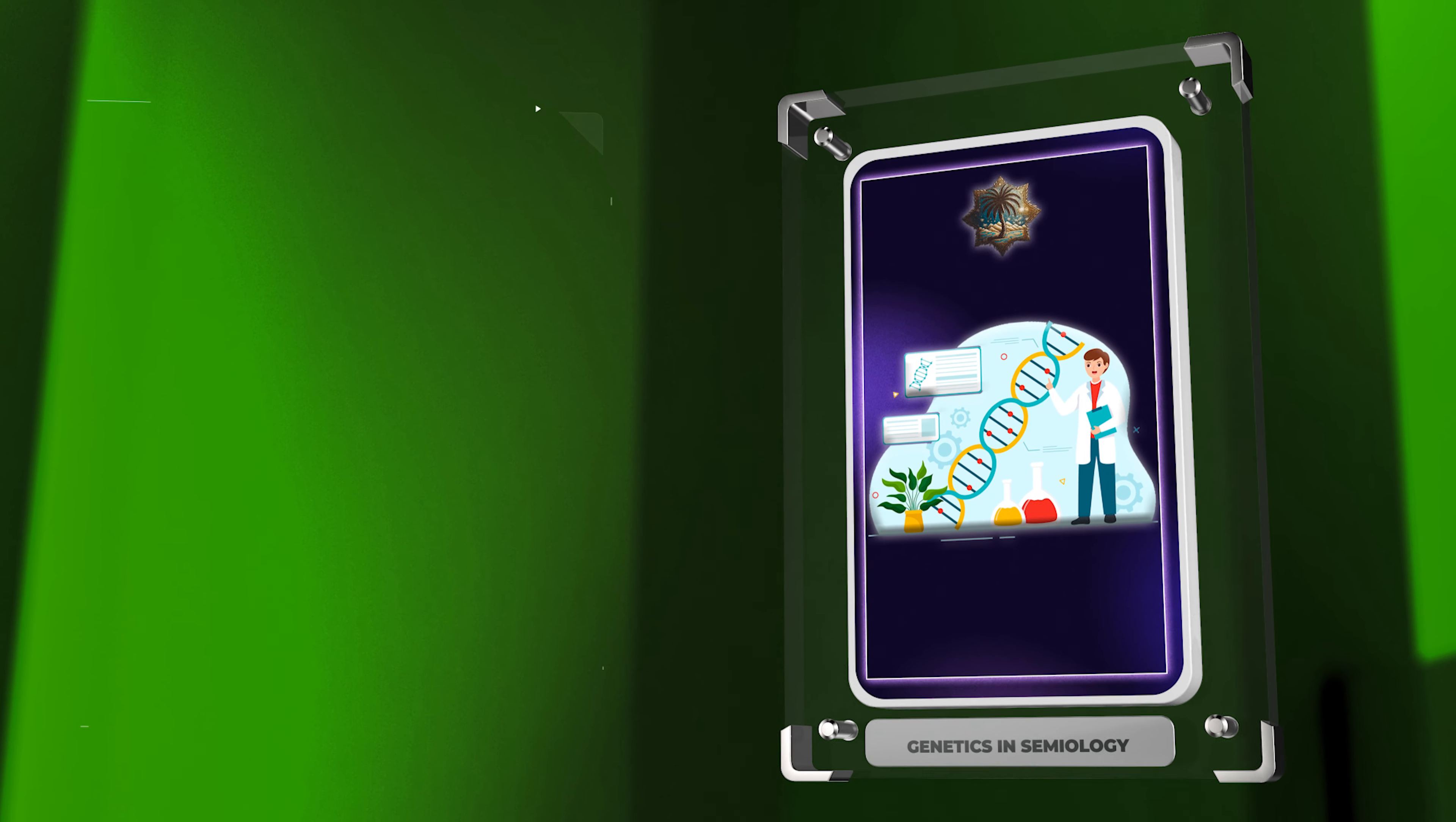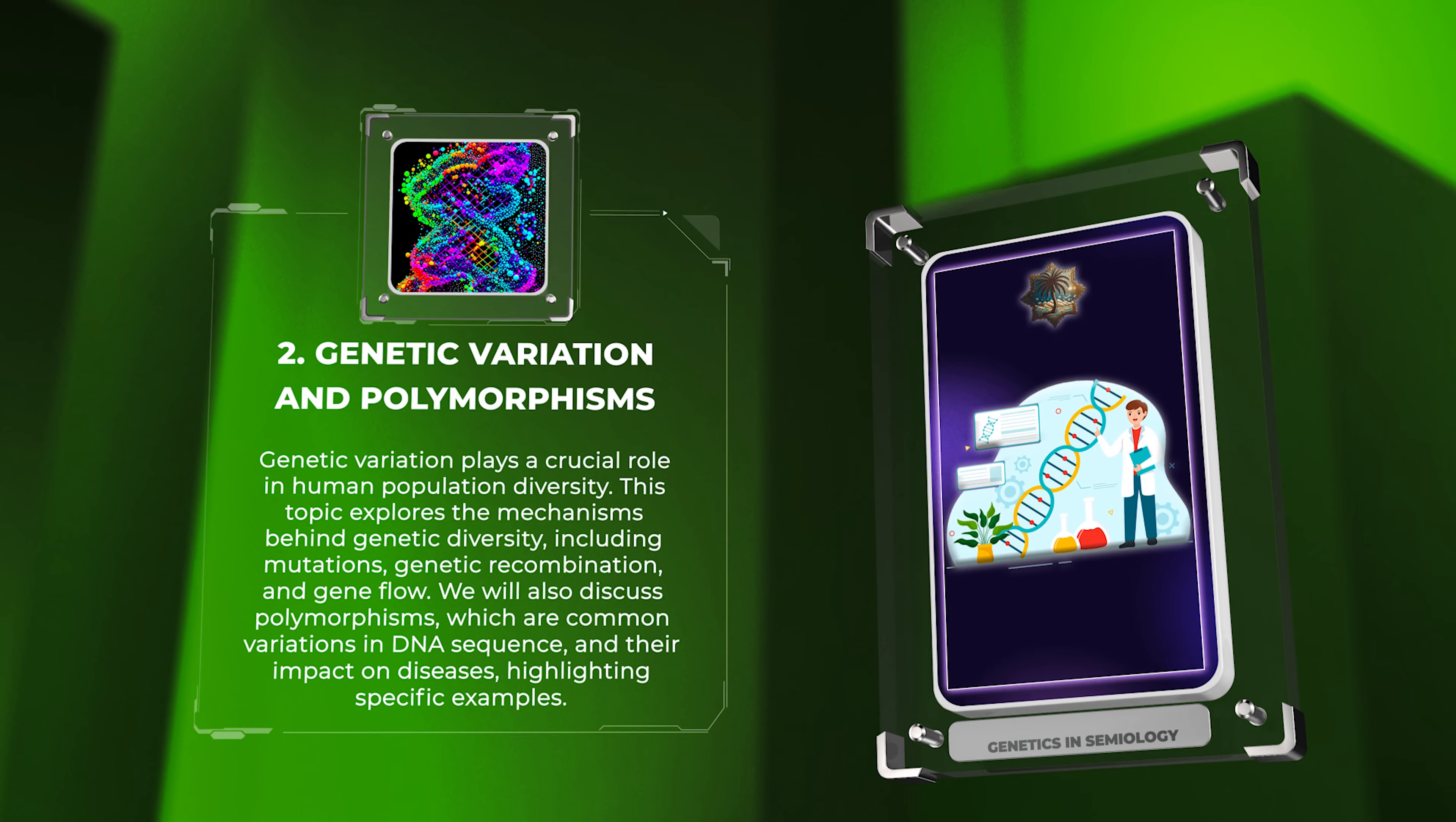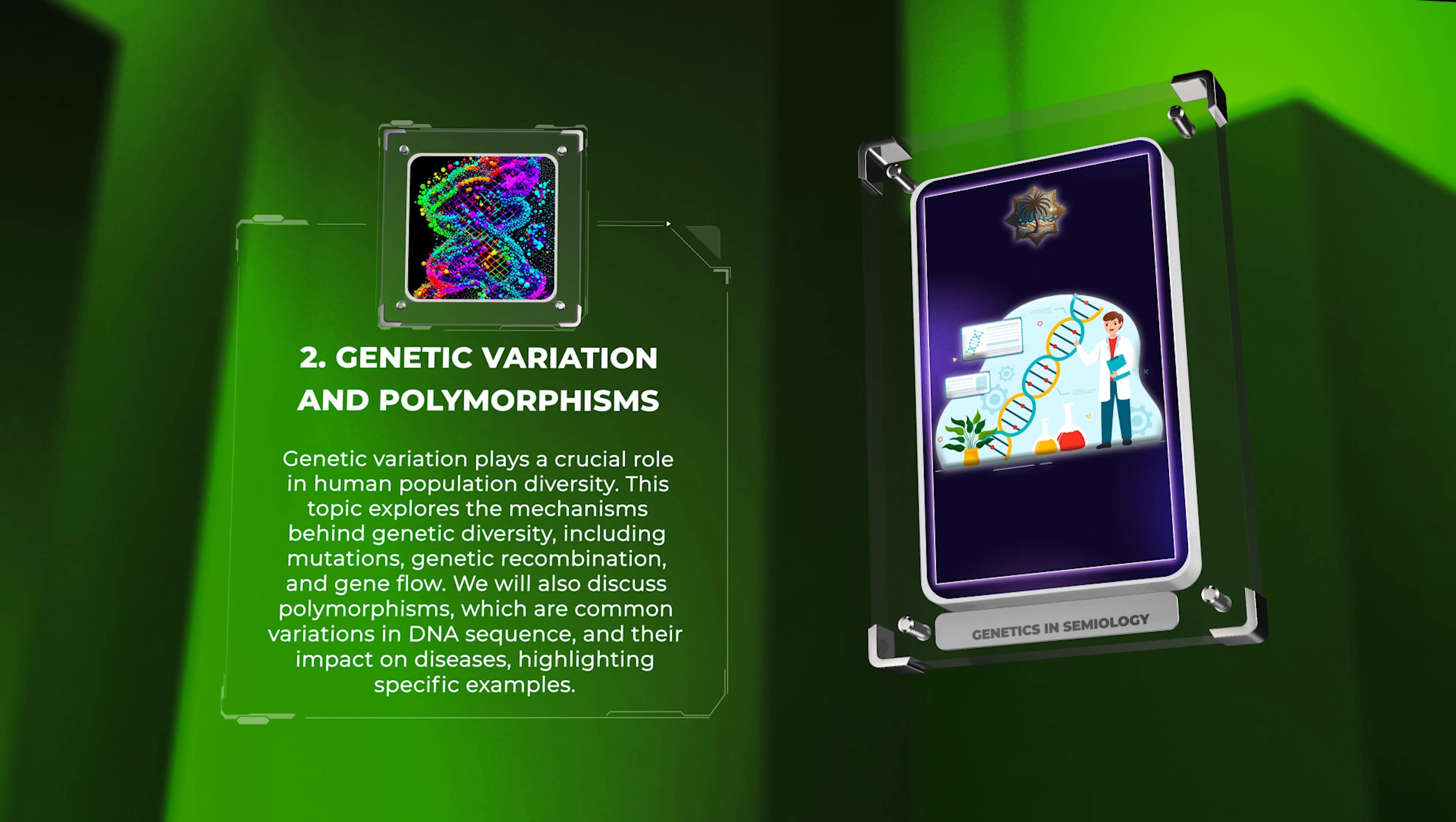Genetic variation plays a crucial role in human population diversity. This topic explores the mechanisms behind genetic diversity, including mutations, genetic recombination, and gene flow. We will also discuss polymorphisms, which are common variations in DNA sequence, and their impact on diseases, highlighting specific examples.